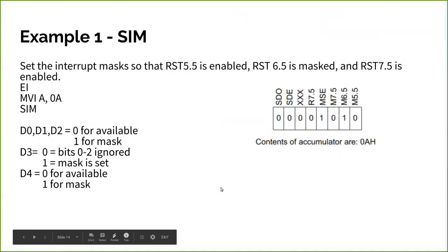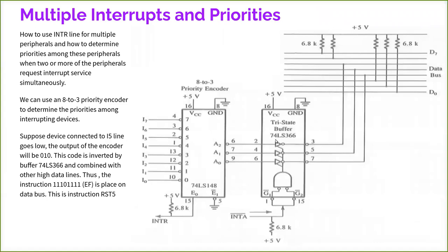So now it has 8 inputs through which you can connect 8 devices. Suppose the device is connected with this i5, that is input 5. Now it requires the service. It is interrupting. Now what will happen? See here it is active low. So when they are not interrupting the microprocessor, all will remain high. But when they want the service of the microprocessor, then an active low will go here.